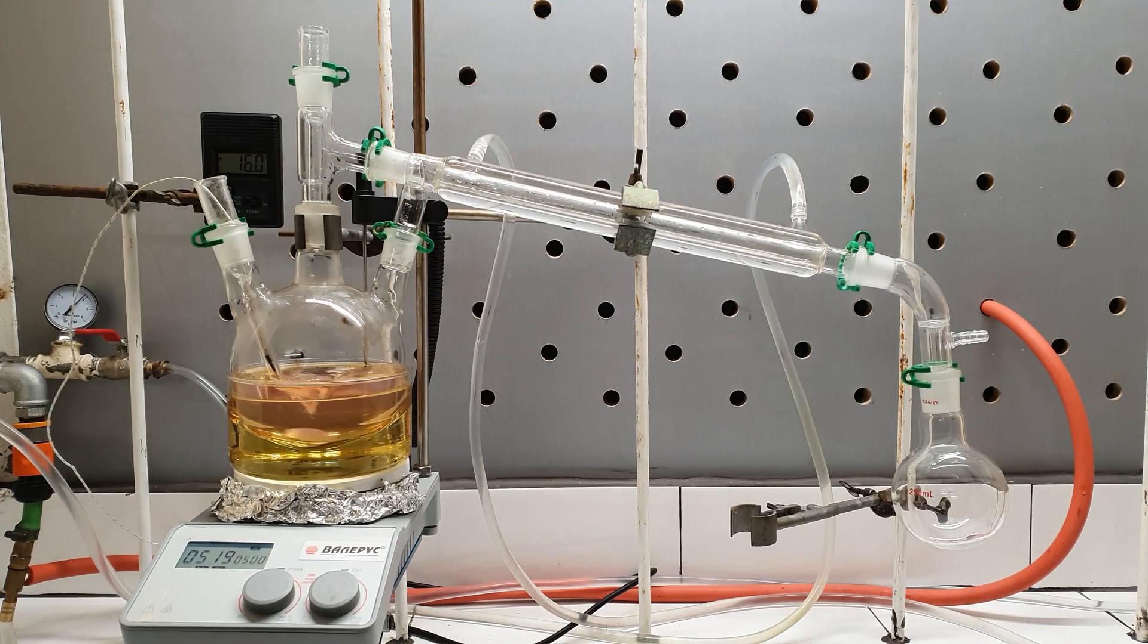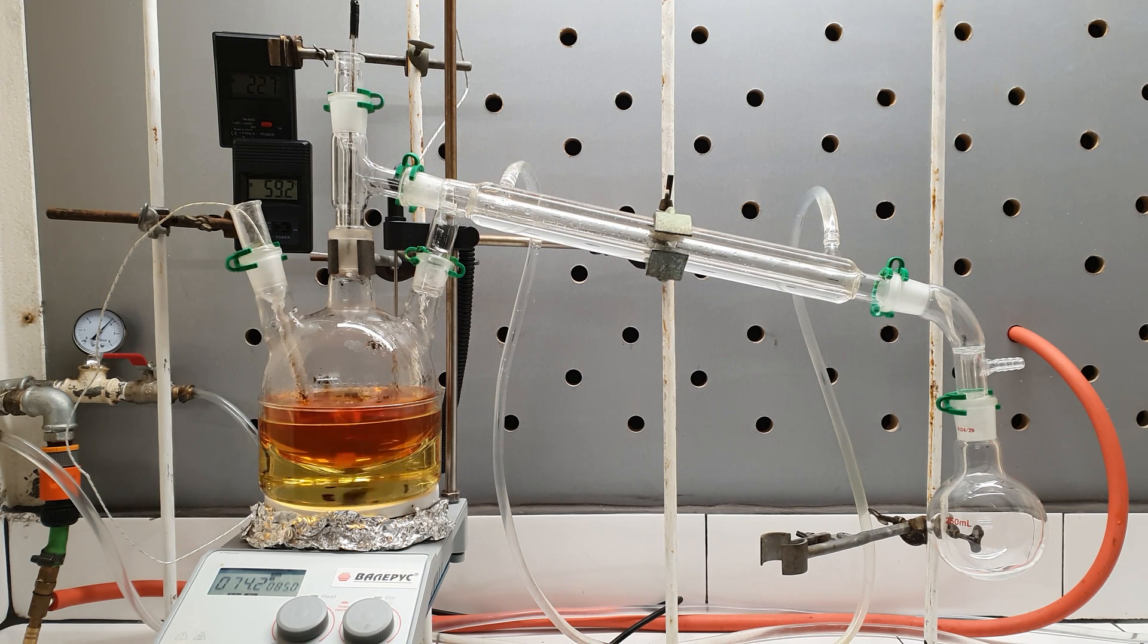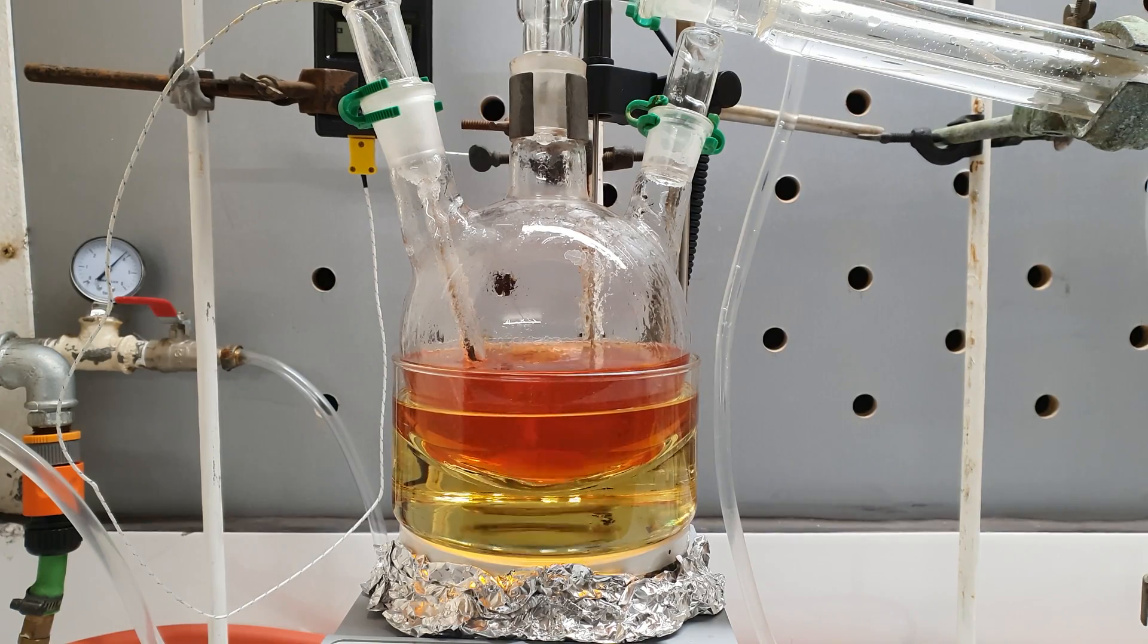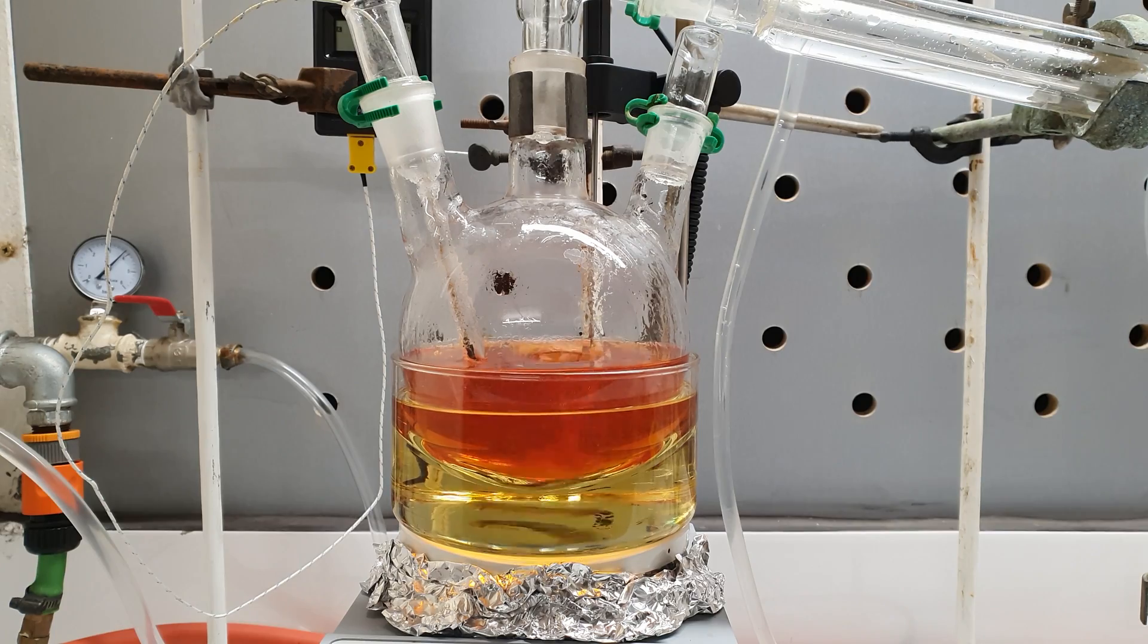The flask was arranged for simple distillation and heated on an oil bath. This resulted in a very evident color change from pale pink to red. When it reached 60 degrees, carbon dioxide started to form.